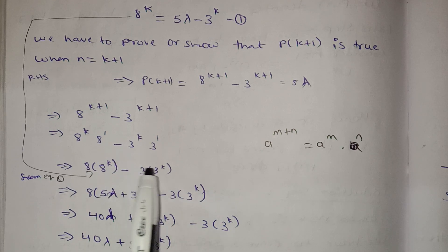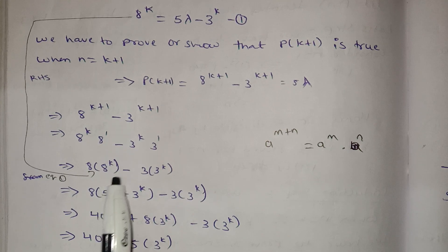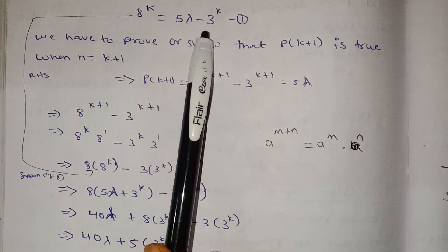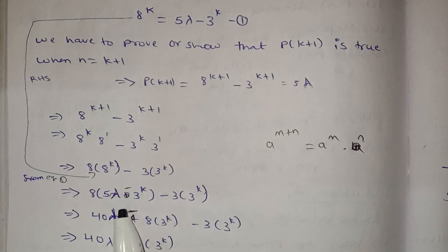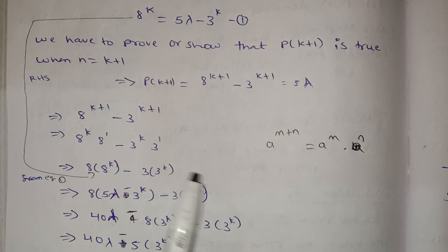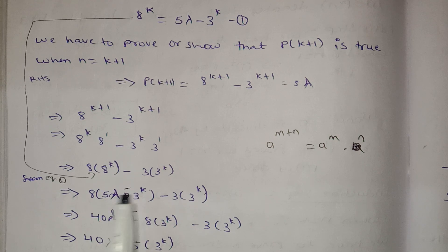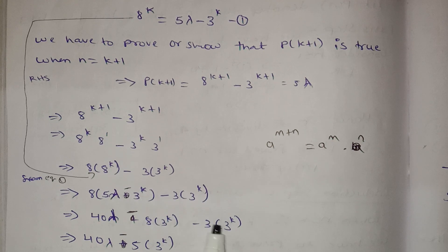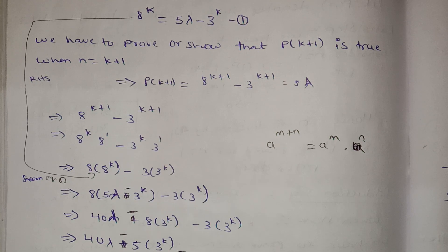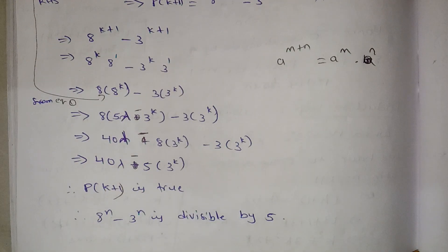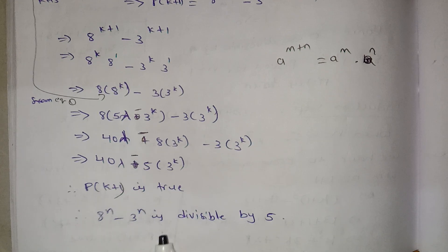We substitute 8 power k minus 3 power k. So we get 5 lambda and 3 power k terms: 40 lambda minus 5 into 3 power k, which gives us 5 as a common factor. So it is divisible by 5, and P of k plus 1 is true. Therefore 8 power n minus 3 power n is divisible by 5.